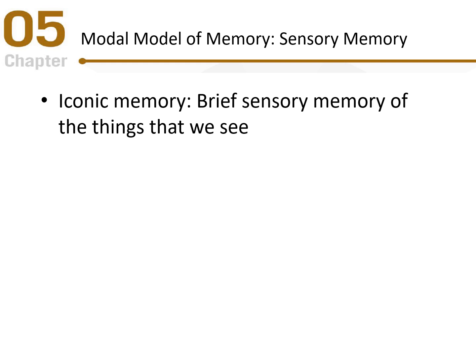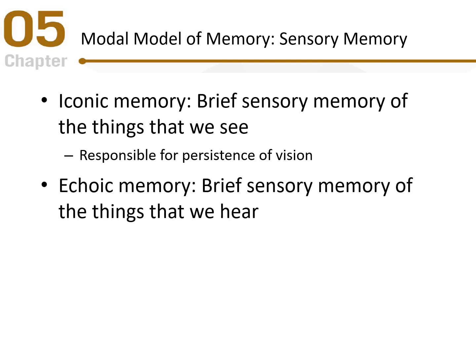What's happening in that experiment relates to iconic memory — brief sensory memory of things we see. When something on a screen is taken away, we see a brief remnant or shadow for about a second. This is responsible for persistence of vision, like the sparkler trail. Similarly, echoic memory is brief sensory memory of things we hear — a tone will seem to echo briefly after it's gone, which is the persistence of sound.